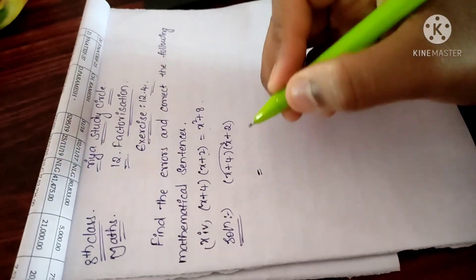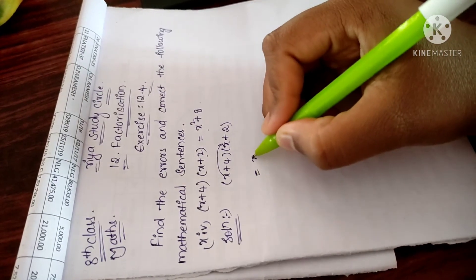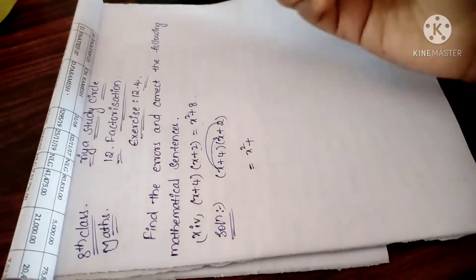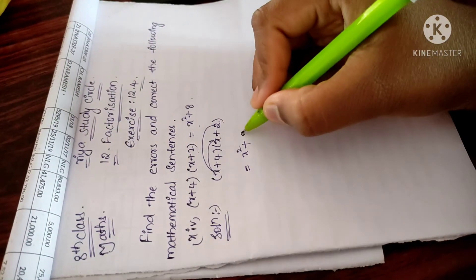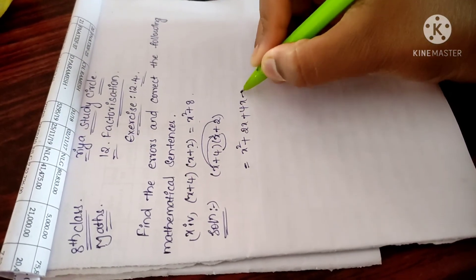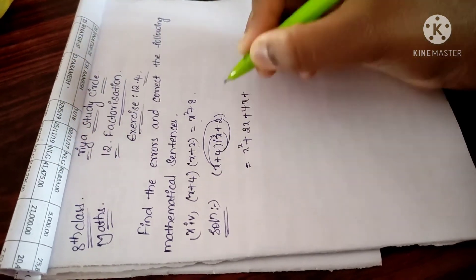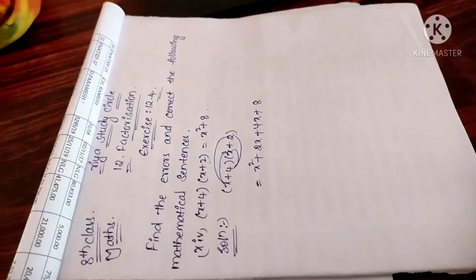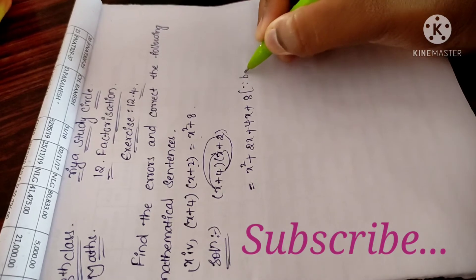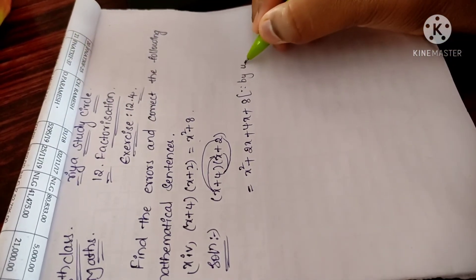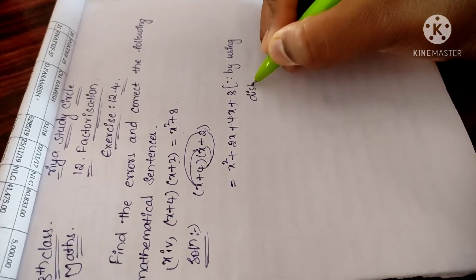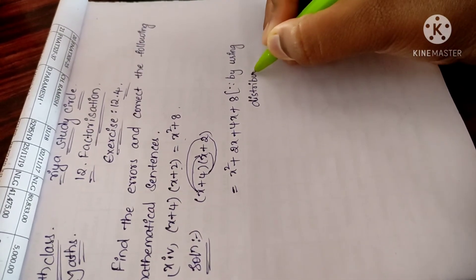Here, x into x is x square plus x into 2 is 2x plus 4 into x is 4x plus 4 into 2 is 8. We all know it is by using distributive law.